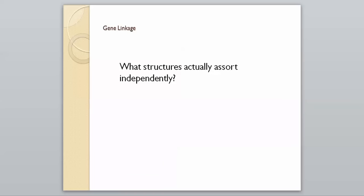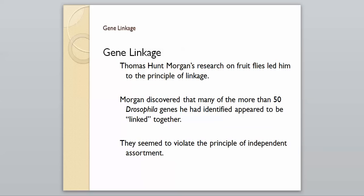Let's get started. The question is: what structures actually assort independently? Remember, assort meant separate, and independently means by themselves. We said genes weren't connected to one another at all — they're just going to separate on their own no matter what. However, a concept of gene linkage came up, introduced by a guy by the name of Thomas Hunt Morgan through his research on fruit flies, which led him to the principle of linkage.